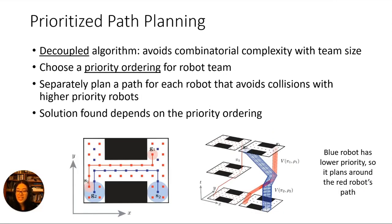One strategy is Prioritised Path Planning. This is a decoupled algorithm, so rather than planning in the joint configuration space of all of the robots, we plan for each robot individually while still ensuring that collisions are avoided. This importantly avoids having impractical combinatorial complexity with regard to the number of robots.